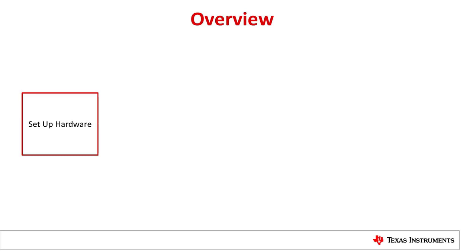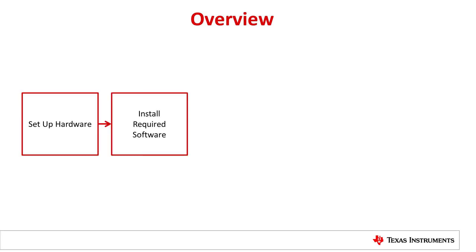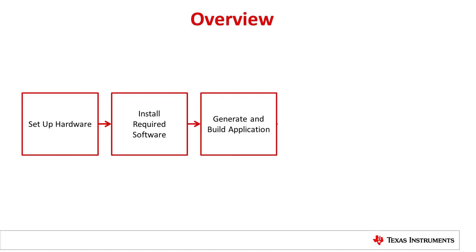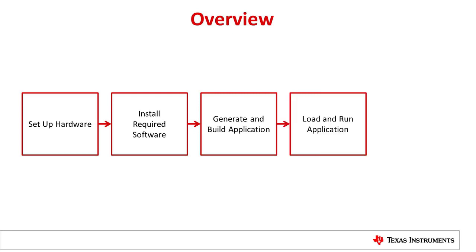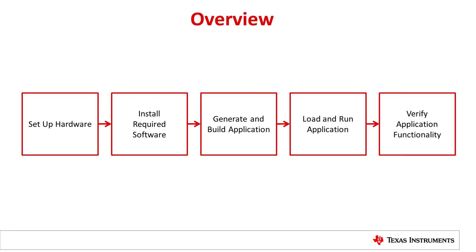First we will set up the AMIC 110 and C2000 development platforms. Next we will install the required software and tools. Then we will generate EtherCAT Slave stack sources and build the projects for AMIC 110 and C2000. After the applications are successfully built, we will flash the binaries to the C2000 and AMIC 110 boards and run the applications. Finally, we will verify the application functionality with the TwinCAT3 EtherCAT master.